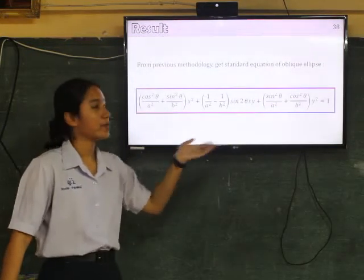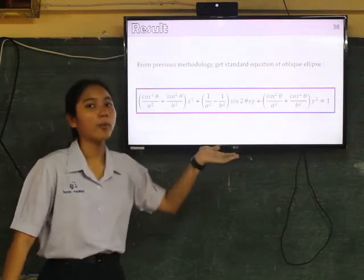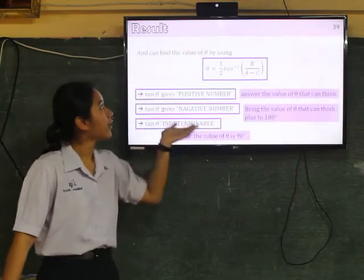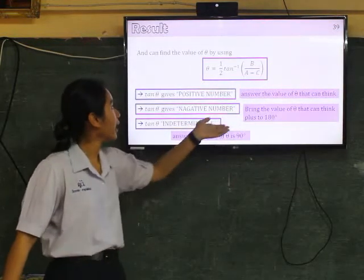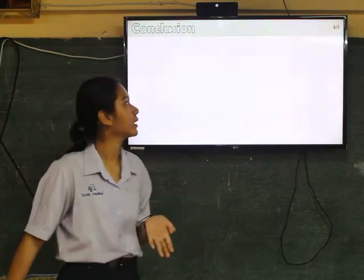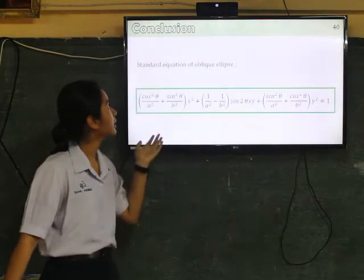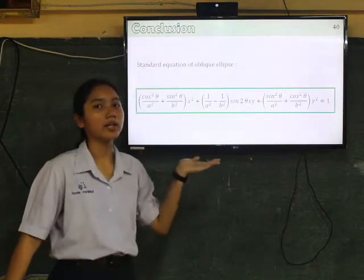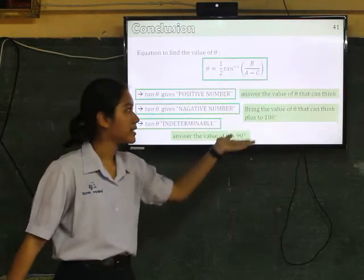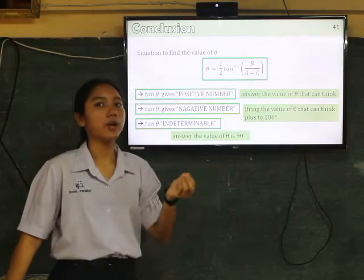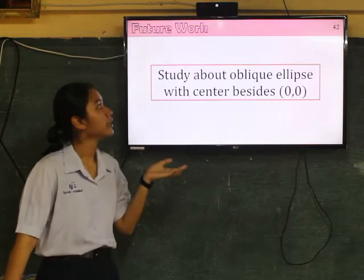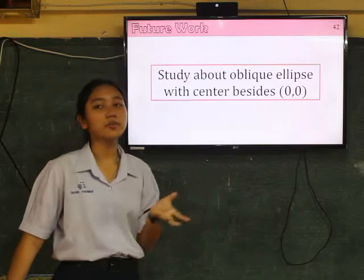And the result of this project is the standard form of oblique ellipse with center zero zero. And we can find the value of theta by using this equation and have to consider three cases before answering the value of theta. And in my future work is to study about oblique ellipse with the center besides zero zero.